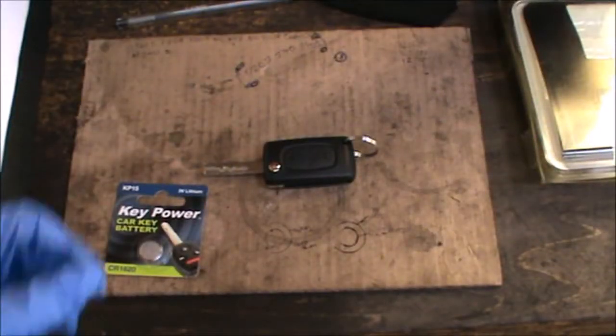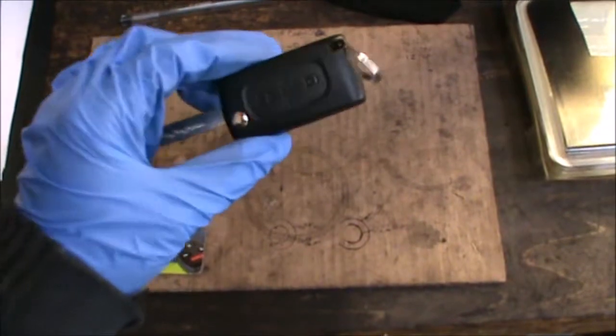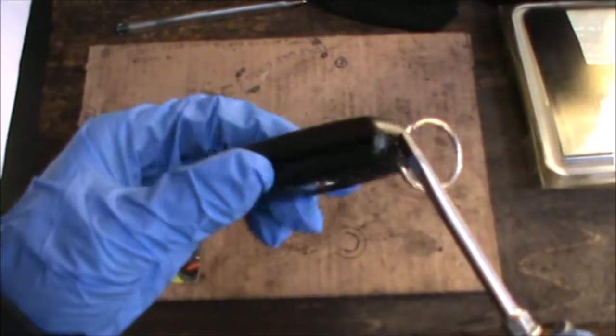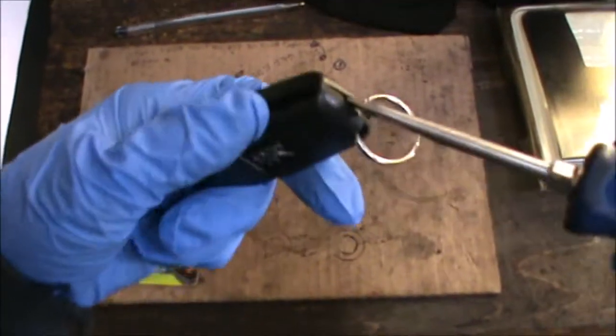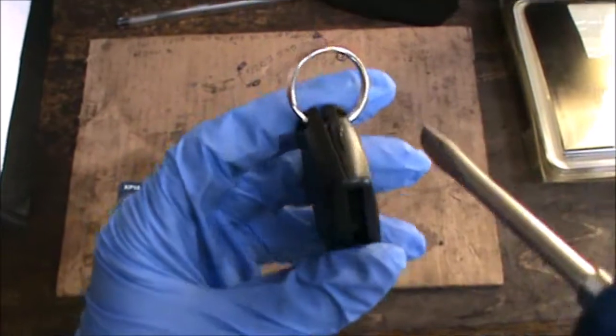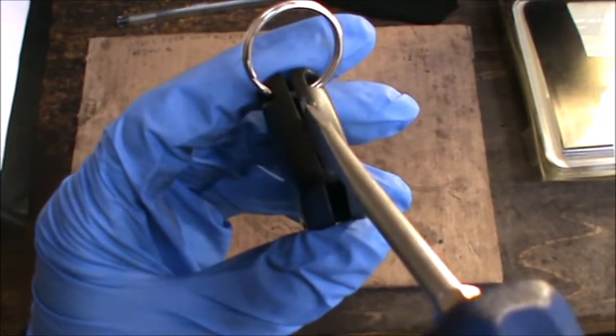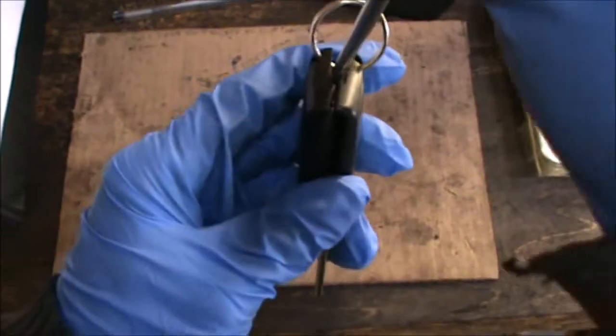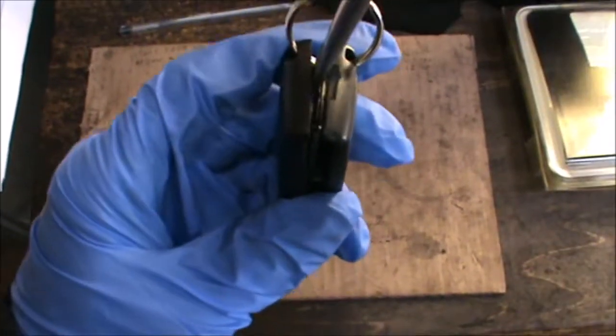Hi there everybody, just a quick video today. I'm gonna be changing the key fob battery. This belongs to a Peugeot 308. Now there's a little opening in here where you can just get a screwdriver in, a flathead screwdriver.